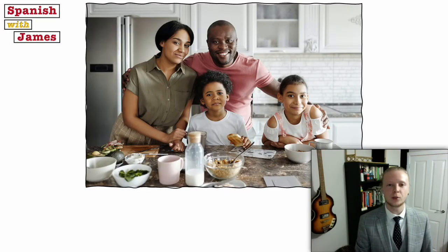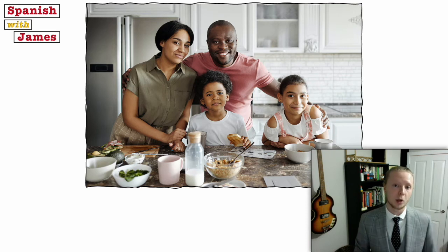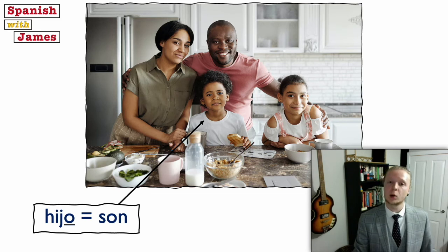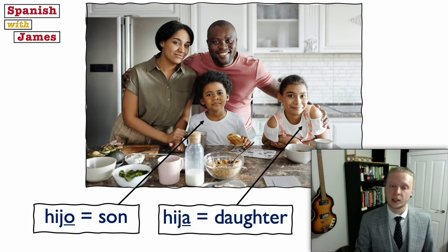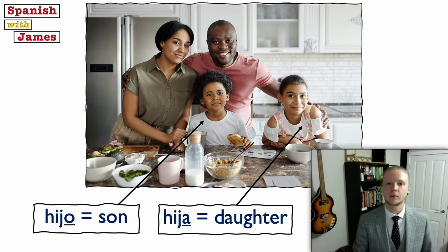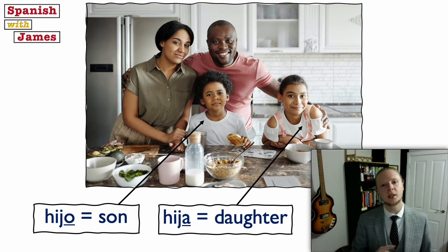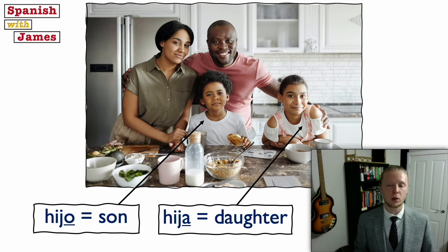It's also useful to know the word for son and daughter, especially because we use this word to say 'I'm an only child'. To say son it's hijo — remembering that the H is always silent. And O changes to A, so daughter is hija. To say 'I'm an only child', if you're a boy you'd say soy hijo único, almost like 'I'm a unique son'. Or if you're a girl, soy hija única.